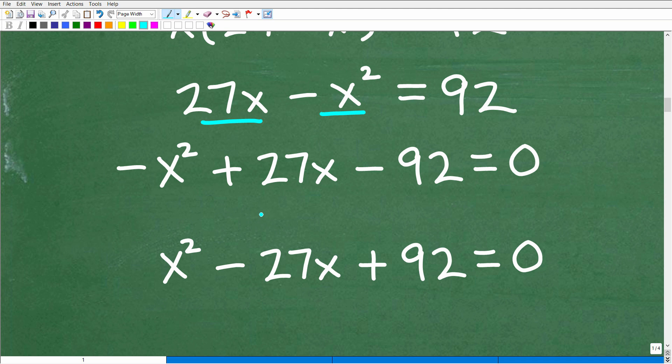Okay. So we have negative X squared plus 27X, and then I'll subtract 92 from both sides. And now I have this equation written in standard form. So standard form of quadratic equation is aX squared plus bX plus c is equal to zero.